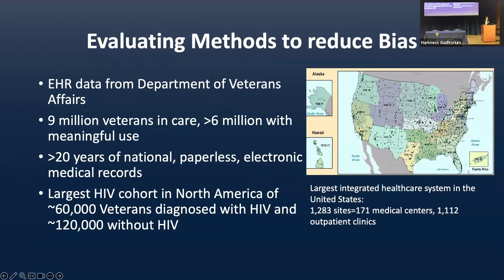We use electronic health record data from the Department of Veterans Affairs. The VA is a goldmine for researchers — there are 9 million veterans in care and more than 6 million with meaningful use data. We have over 20 years of longitudinal data, and the largest HIV cohort in North America, with more than 60,000 veterans diagnosed with HIV and demographically matched people without HIV. The map on the slide shows the locations of VA healthcare facilities, which are greater than 1,300 across the entire country.